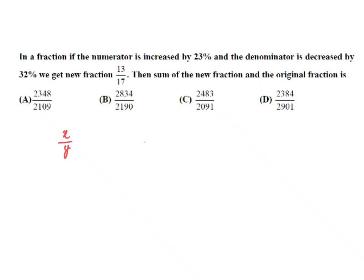You are increasing the numerator by 23%, which means 123%. The denominator you are decreasing by 32%, which means you are multiplying it by 68%, so that you are getting 13 by 17. So you can say 17 goes up, 17 fours up. So x by y equals the original fraction is 52 by 123, and the new fraction is 13 by 17.